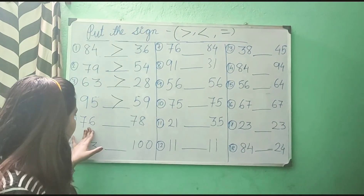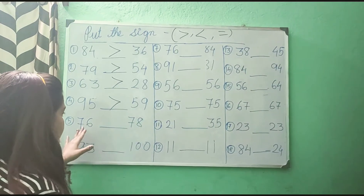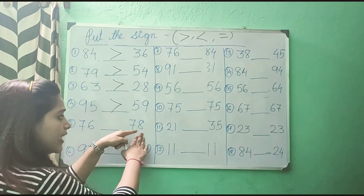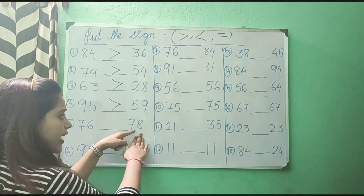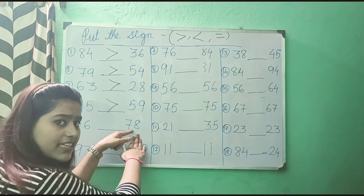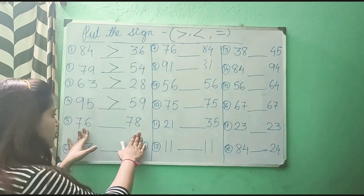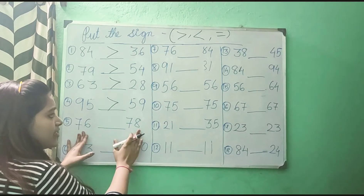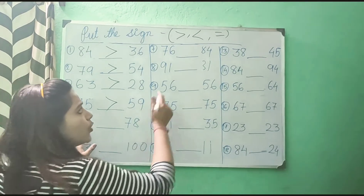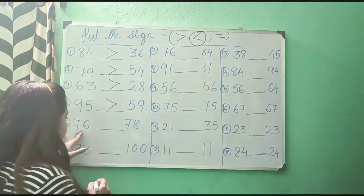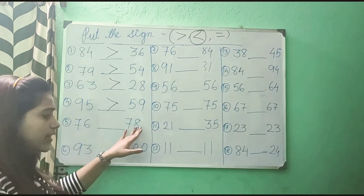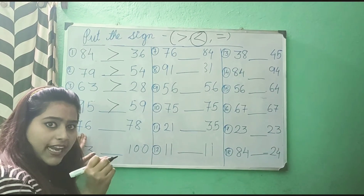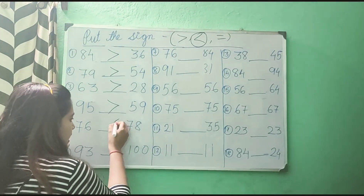Now, 76 and 78. Here 76 is smaller than 78. As 78 is the bigger one and 76 is the smaller one, and as it is smaller than 78, we will put less than. It is smaller than this, that is why I am giving the sign less than.